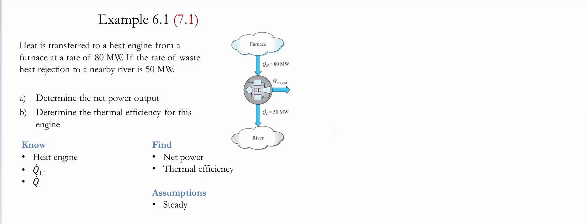In a heat engine, the net power output is equal to the difference of the heat that is received by the heat engine and the heat that is released by the heat engine. Therefore, we simply write the net power output as W_net equals Q_H minus Q_L.